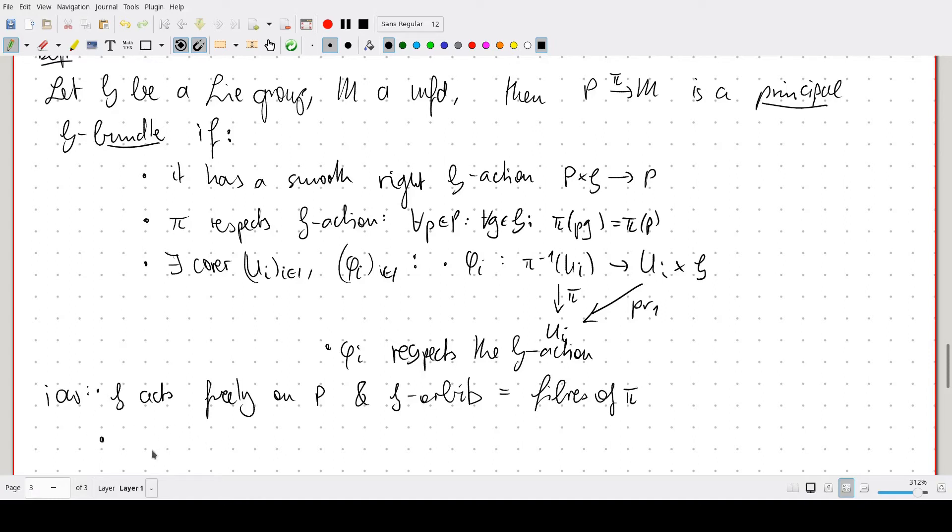And this means that we are now dealing with a fiber bundle where every fiber is, well, not a group, but sort of the group G that forgets about its neutral element, meaning that the fibers are principal G-spaces. So, spaces on which G acts freely and transitively.